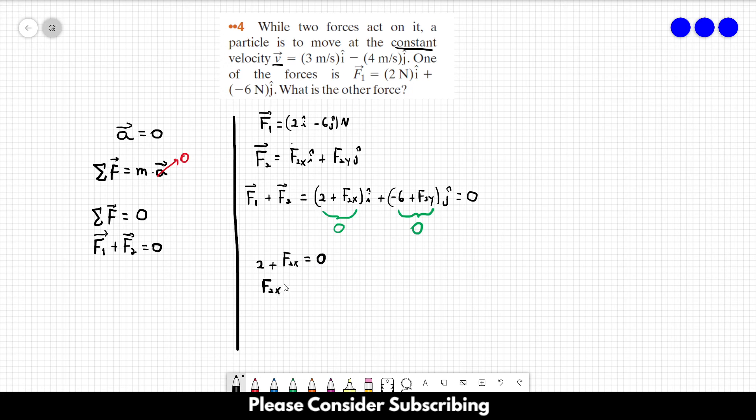And from this equation, we know that minus 6 plus F2y is equal to zero, so F2y is equal to 6 newtons.